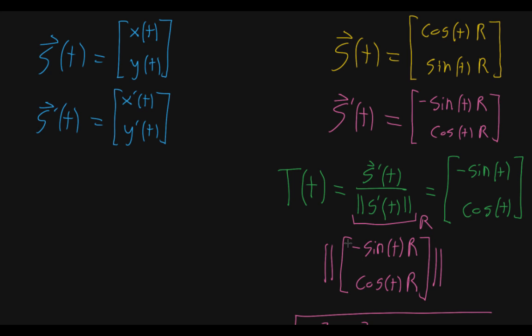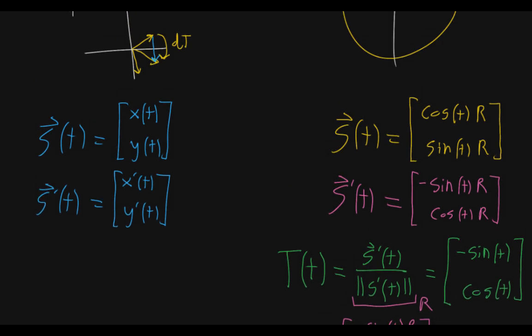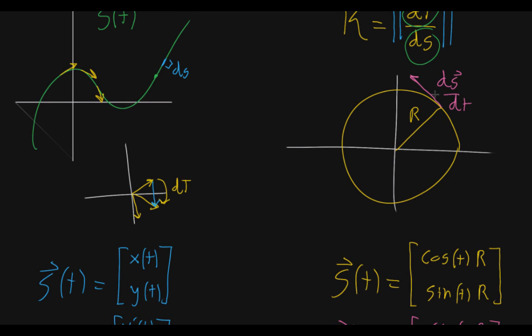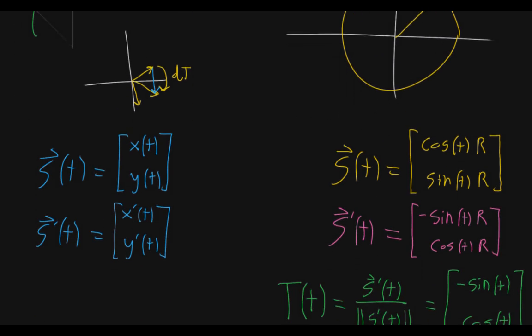Continuing from the last video, we're looking for the unit tangent vector function given the parameterization. The specific example is a function that parameterizes a circle with radius R, but I also want to show what this looks like more abstractly.